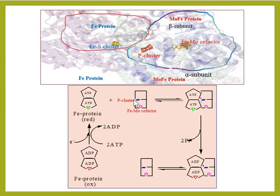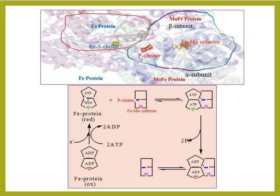This is the structure of the MoFe protein. These are the two subunits of the MoFe protein: the beta unit and the alpha unit. The blue part is the P cluster and the purple or pink part is the FeMo cofactor. So this is the MoFe protein.